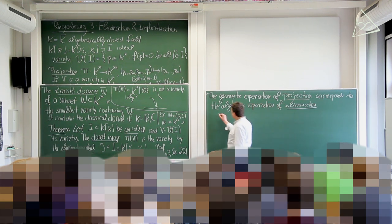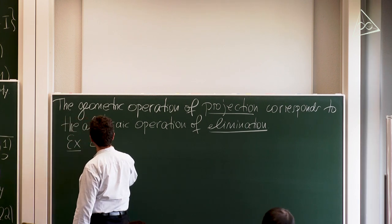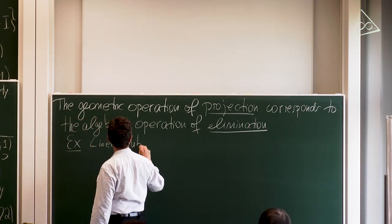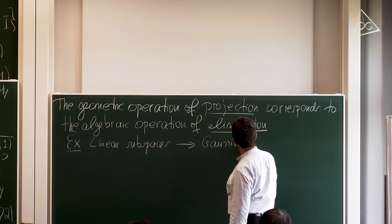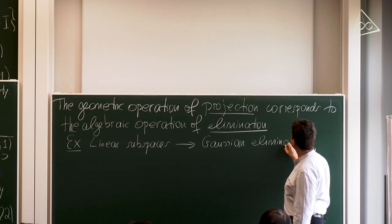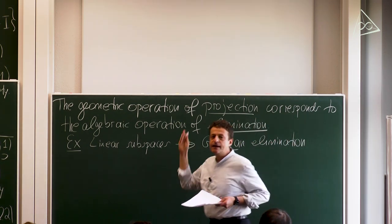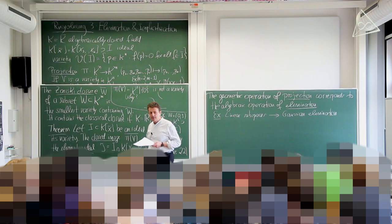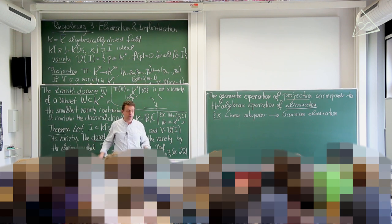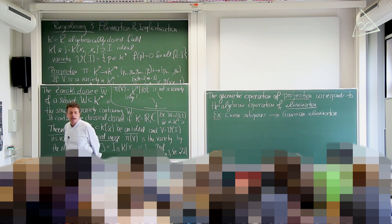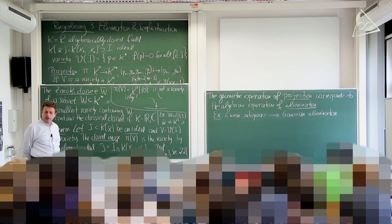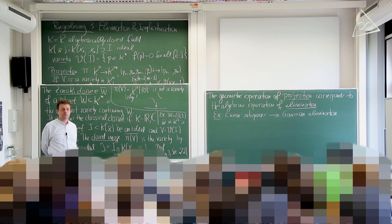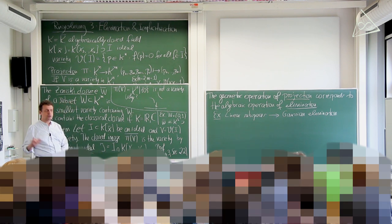Elimination is projection. If you have linear subspaces, the projection corresponds algebraically to Gaussian elimination. If you have a seven-dimensional linear subspace of 12-dimensional space represented by matrices, you carry out row operations — that's Gaussian elimination — and geometrically this projects your subspace into lower-dimensional space.